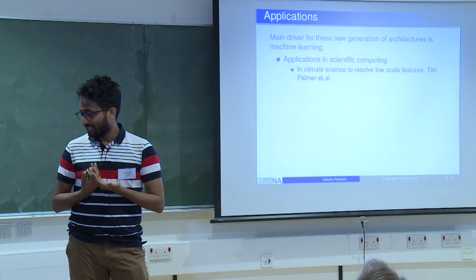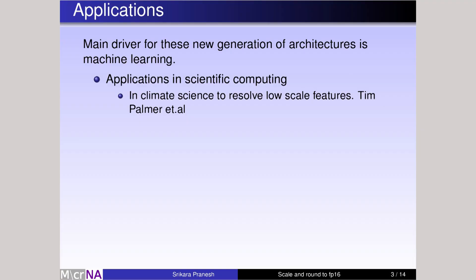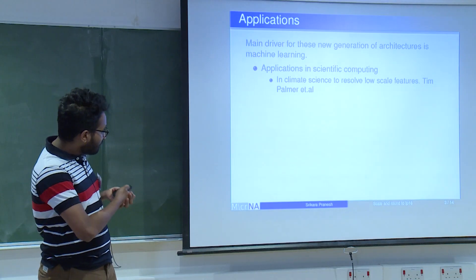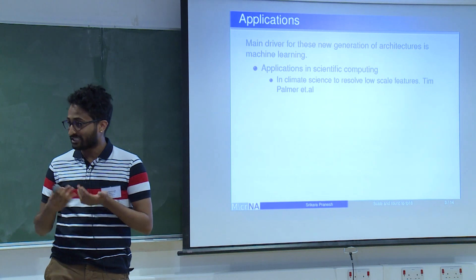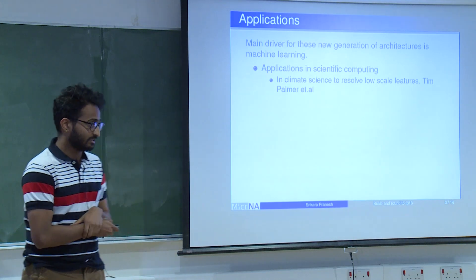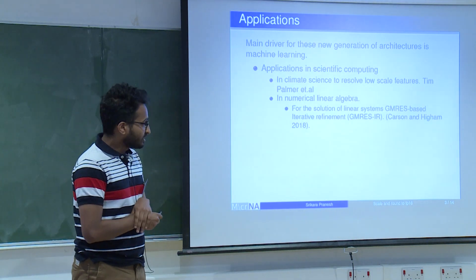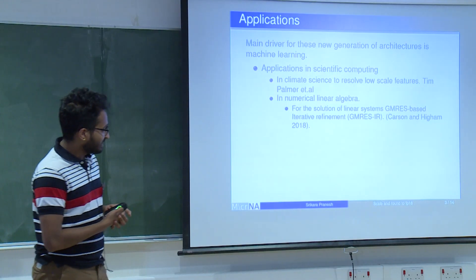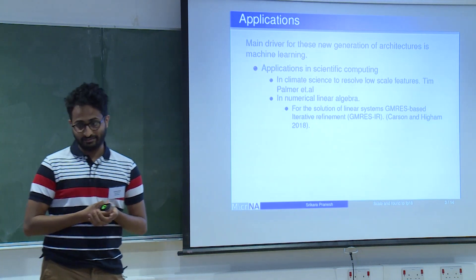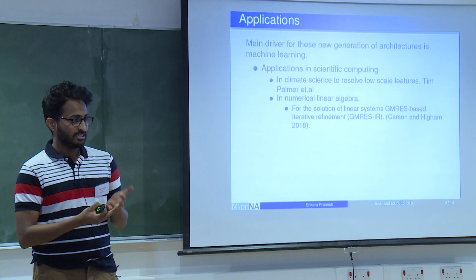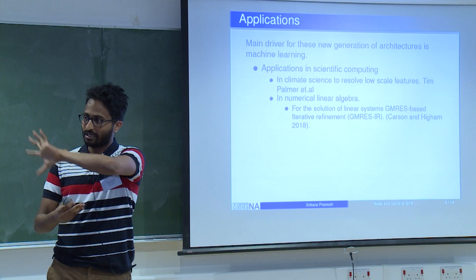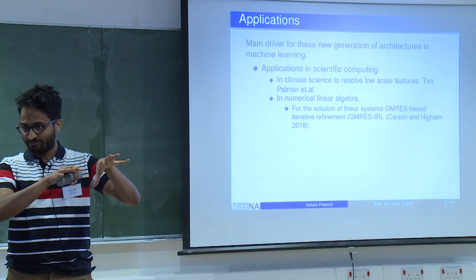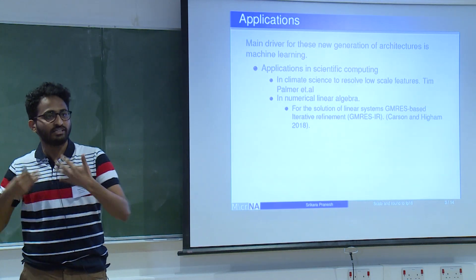Even though the main driver for these architectural advancements is machine learning, there is great interest and effort being put into using these new architectures for general purpose scientific computing. For example, Tim Palmer's group at Oxford is exploring the idea of using low precision data formats for climate modeling and has had huge success. I am particularly interested in numerical linear algebra — how we can use these new data formats in our usual numerical linear algebra computations. I'll be talking about solving linear systems of equations, specifically the GMRES-based iterative refinement algorithm designed by Nick and Erin.